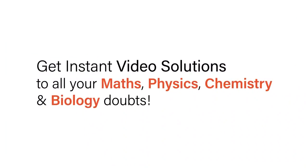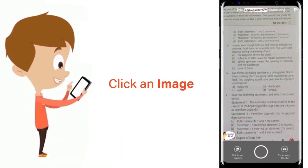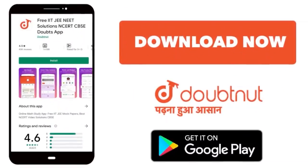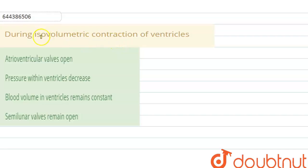With Doubtnet, get instant video solutions to all your maths, physics, chemistry and biology doubts. Just click the image of the question, crop the question and get instant video solution. Download Doubtnet app today. Hello student, here is the question: during isovolumetric contraction of the ventricles, atrioventricular valve open, pressure within the ventricles decrease, blood volume in the ventricles remain constant, semi-lunar valve remain open.